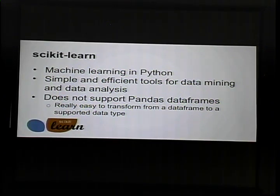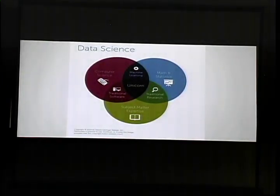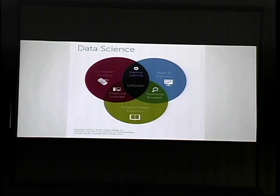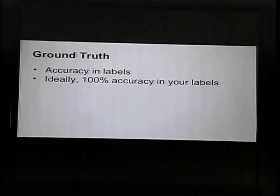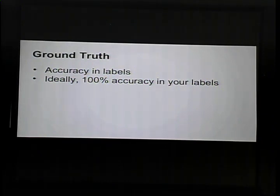Data science is everyone's favorite buzzword, but what really is it? I think it's asking your data questions and hopefully getting actionable information from it. To properly do this you need someone with subject matter expertise, someone good in statistical analysis, and someone to write the code — finding all that in one person is like finding a unicorn. Fortunately, scikit-learn pretty much took care of the coding and math side of things, so I just had to provide the subject matter expertise. Ground truth is the accuracy of your labels — ideally you want 100% accuracy, but if you have bad data going into your algorithm, you're going to have bad information coming out.